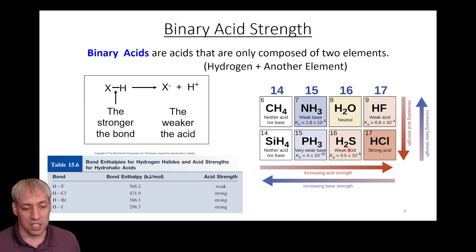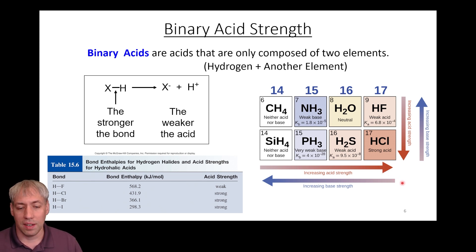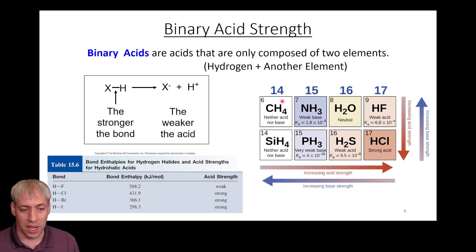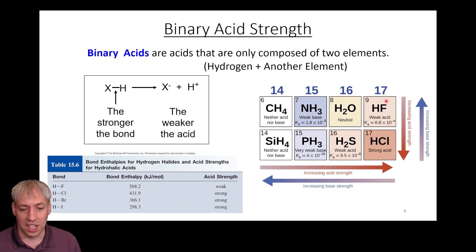The same trend holds across all binary acids, primarily dictated by bond length with some contribution from electronegativity difference. Looking at the periodic table, acid strength increases as you go down or to the right. Going across a period: CH4, NH3, H2O, HF — HF is the strongest acid in that row. Comparing HF and HCl, HCl is a stronger acid. Acid strength increases going down and to the right.